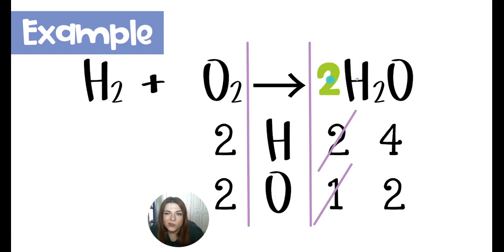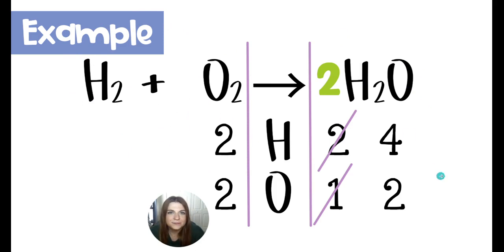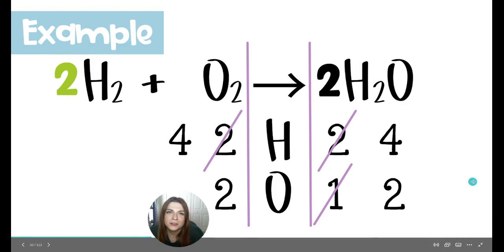So I fixed that by putting a 2 in front of the water. When I do that, everything that comes after is multiplied by two. So now instead of having two hydrogens, I have four, and instead of having one oxygen, I have two. But I'm still not balanced because the product side has more hydrogens than the reactant side. So I'll have to make some adjustments to the reactants — if I put a 2 in front of the hydrogen, now I have four hydrogens on each side and two oxygens on each side of my chemical equation.